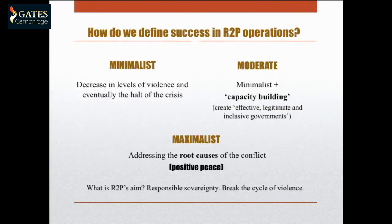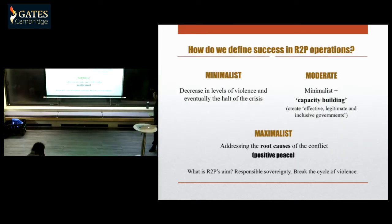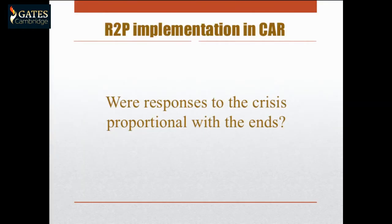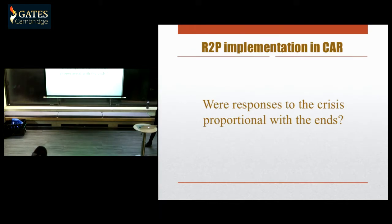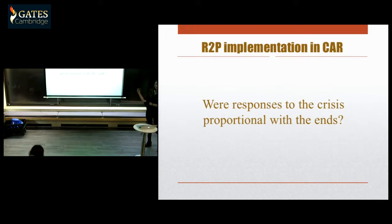If you think about what the responsibility to protect is — which for me is creating responsible sovereigns — then to really break the cycle of violence you'd look for at least a moderate interpretation of success, ideally a maximalist one. My first question when looking at R2P implementation in the CAR was whether the responses the international society has taken were proportional with the ends: at least a moderate interpretation of success — stopping the crisis and then addressing institutional capacity building.